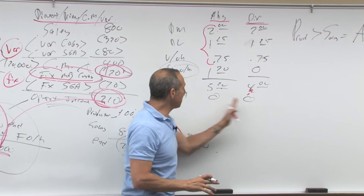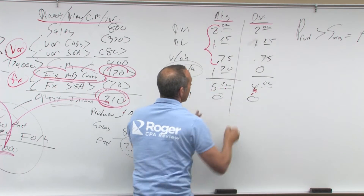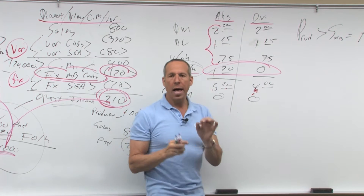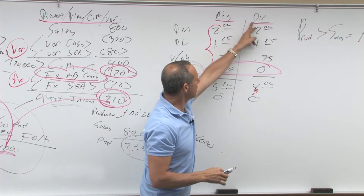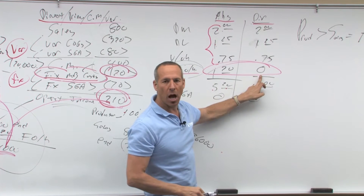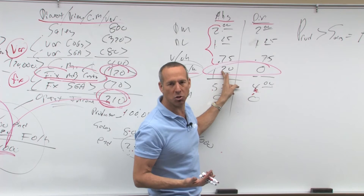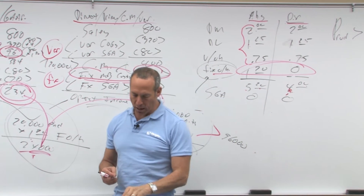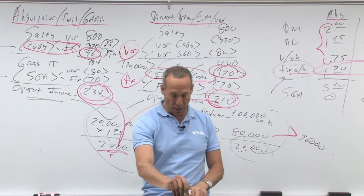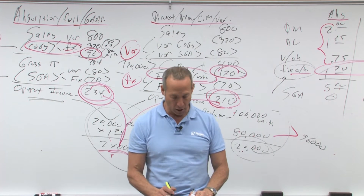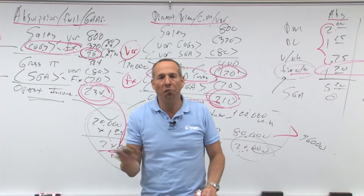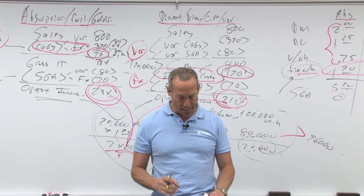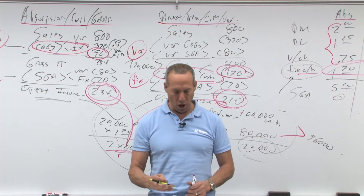So under either method, if they ask about period costs for SG&A, it's the same. If they ask about the other items, it's the same — the difference is fixed overhead. Under direct/variable costing, how much fixed overhead is expensed? All of it. So your $100,000 of fixed manufacturing overhead is expensed as a period cost. Combined with the $80,000 variable selling, the answer is $180,000 period cost, zero product cost.